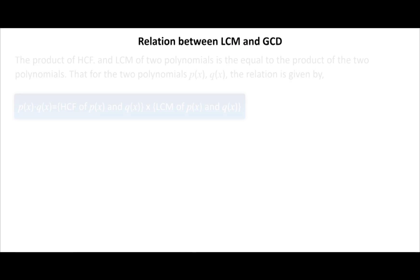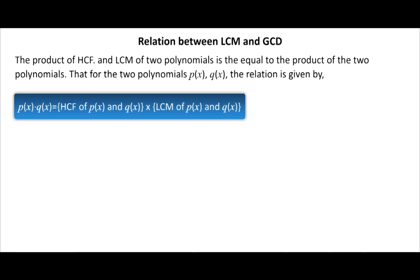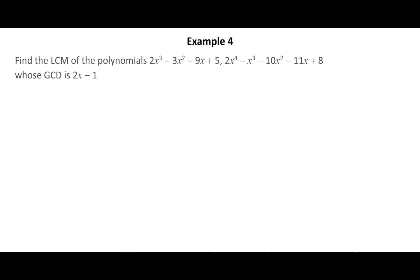Relation between LCM and GCD: the product of HCF and LCM of two polynomials is equal to the product of the two polynomials. For two polynomials P(x) and Q(x), the relation is: P(x) times Q(x) equals HCF of P(x) and Q(x) times LCM of P(x) and Q(x). Example: find the LCM of the polynomials (2x cubed minus 3x squared minus 9x plus 5) and (2x to the power 4 minus x cubed minus 10x squared minus 11x plus 8) whose GCD is 2x minus 1. Click the solution button to view the solution.